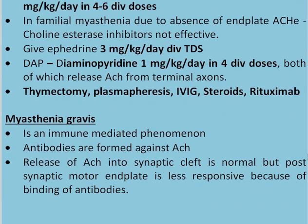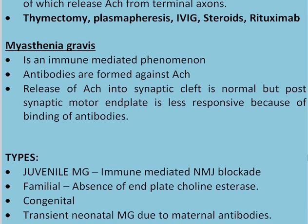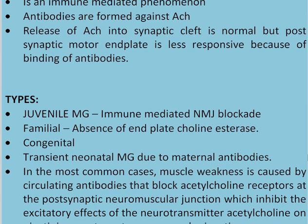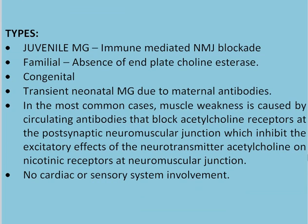Myasthenia gravis is an immune-mediated phenomenon. Antibodies are formed against acetylcholine end plates. The release of acetylcholine into the synaptic cleft is normal, but the post-synaptic motor end plate is less responsive because of antibody binding, so acetylcholine cannot bind to it. Types of juvenile myasthenia gravis include: immune-mediated neuromuscular blockade, familial (absence of end-plate cholinesterase), congenital, and transient neonatal myasthenia gravis due to maternal antibodies. Muscle weakness is caused by circulating antibodies blocking acetylcholine receptors at the post-synaptic neuromuscular junction, inhibiting the excitatory effects of acetylcholine on nicotinic receptors. There is no cardiac or sensory system involvement.